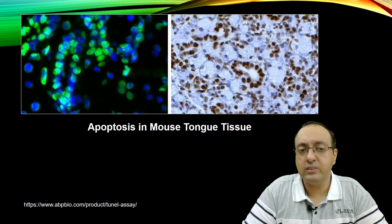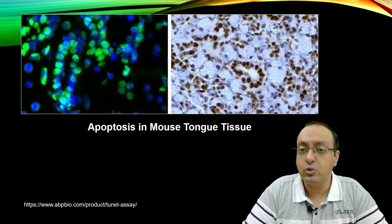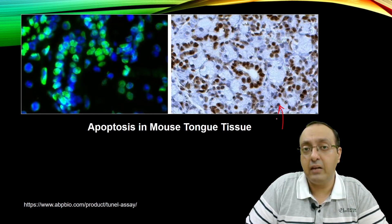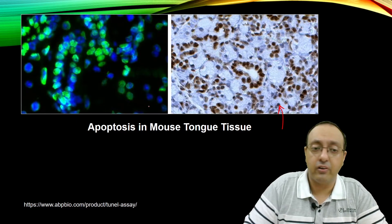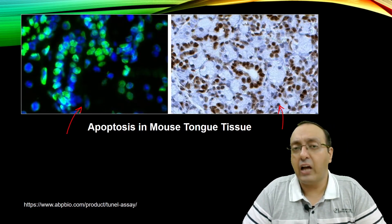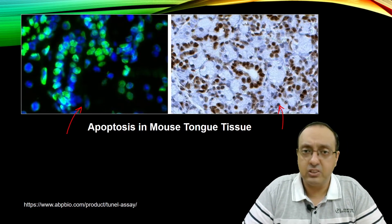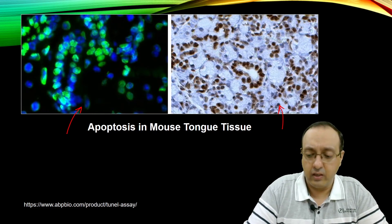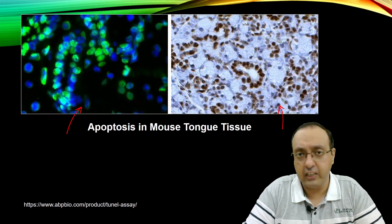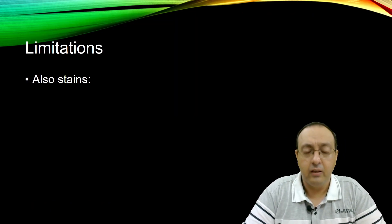Here you can see apoptosis in mouse tongue tissue, shown both in the enzyme-labeled colorimetric reaction as well as the fluorescent reaction. The idea is pretty simple, and you can detect apoptosis both quantitatively and qualitatively.